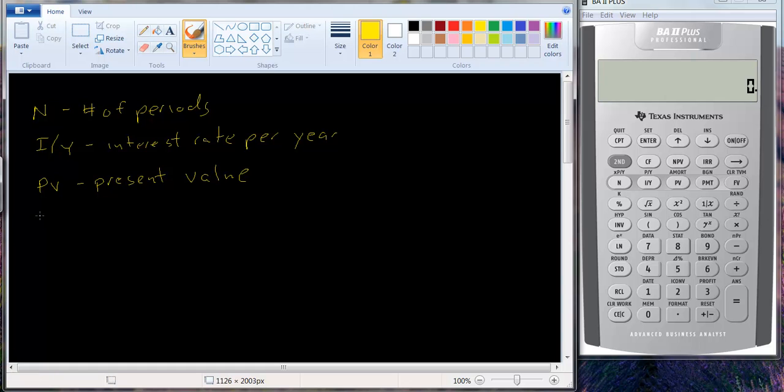There's a PMT. That stands for payment, but essentially that's an annuity. And we'll be doing annuities in the course. Annuities are streams of equal payments made at equal intervals. An example of an annuity would be a mortgage payment. And the last key along that row is the FV key. That is for future value.